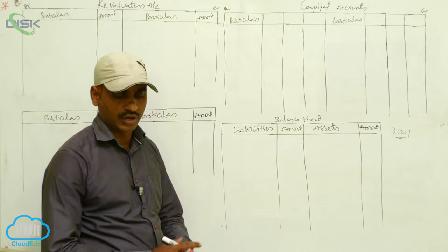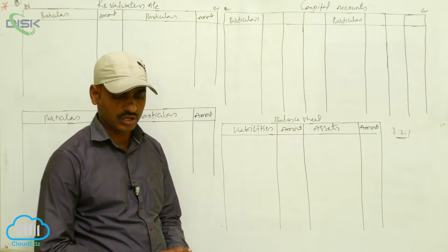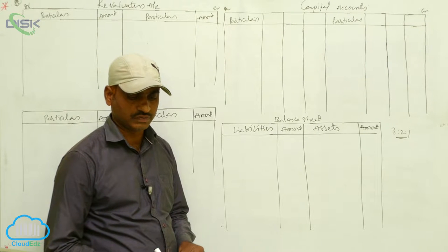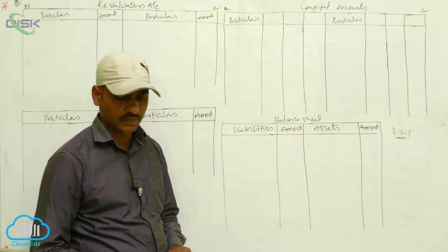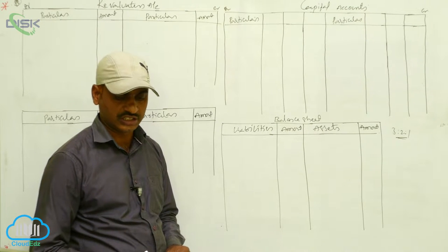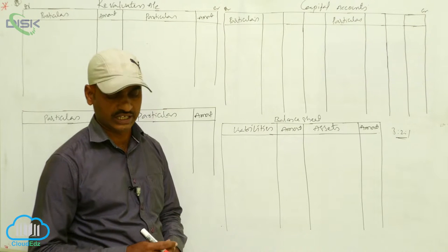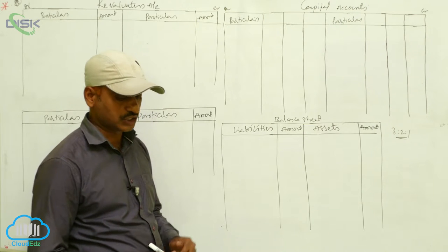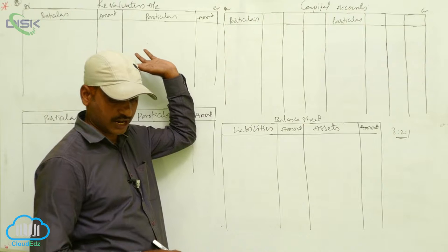On the above date, Rahu retired from the business. Rahu is the third partner. He retired under the following conditions. First, fixed assets are revalued at 42,000. The fixed assets given in the balance sheet were 36,000, and revalued at 42,000, so 6,000 increased. That is appreciation — this appreciation of fixed assets should be written on the credit side of the revaluation account.